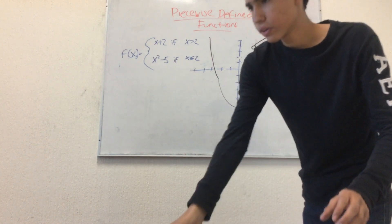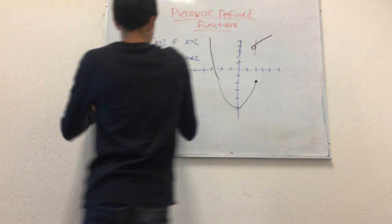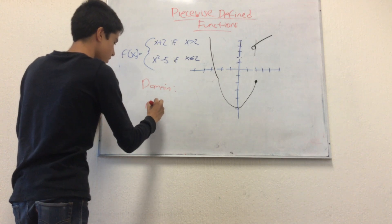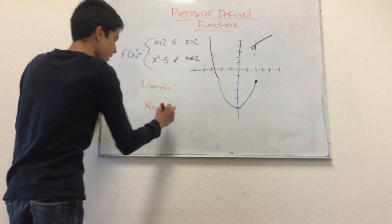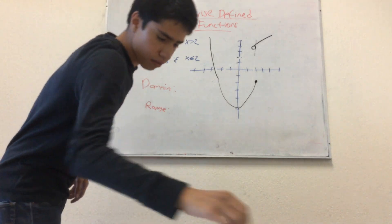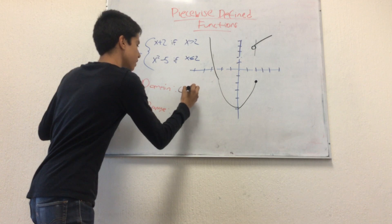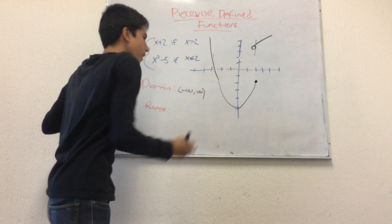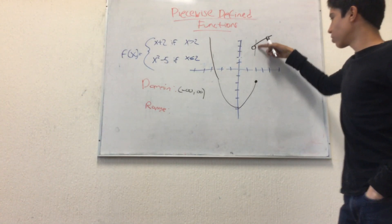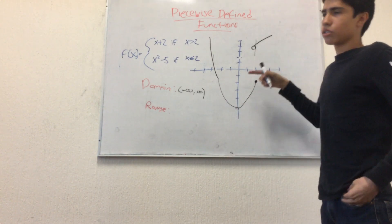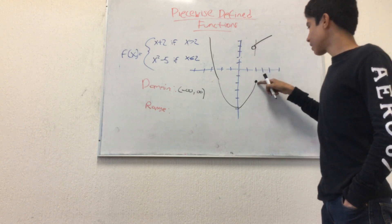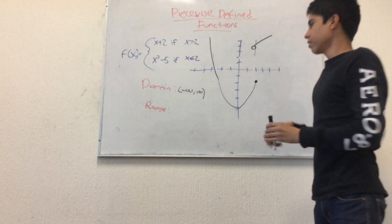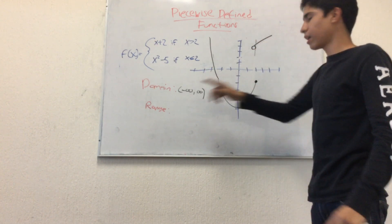Now that we have our two graphs, we can determine the domain and the range. The domain is from minus infinity to infinity, because the line goes all the way. The first piece has an open gap at x equals 2, and the second piece has a closed dot at x equals 2. This fills in the gap and we can go with a continuous line from minus infinity to infinity.